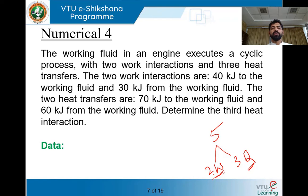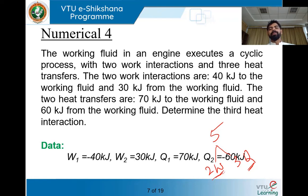The given data: W1 is minus 40 kilojoules (done on the system), W2 is plus 30 kilojoules (done by the system). Q1 is plus 70 kilojoules (heat added to the system), Q2 is minus 60 kilojoules (heat rejected from the fluid). We are supposed to find Q3.